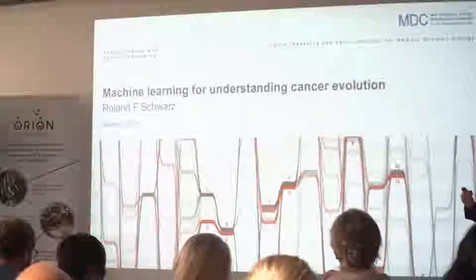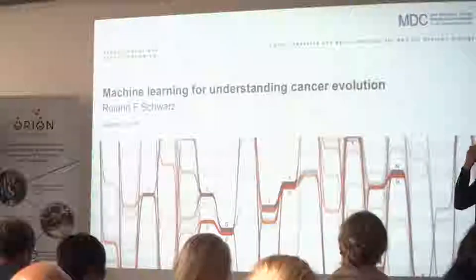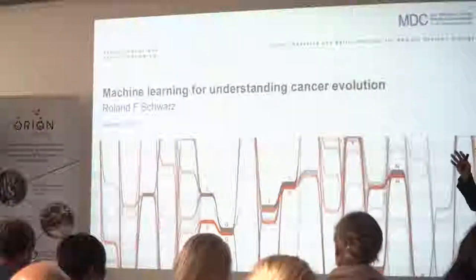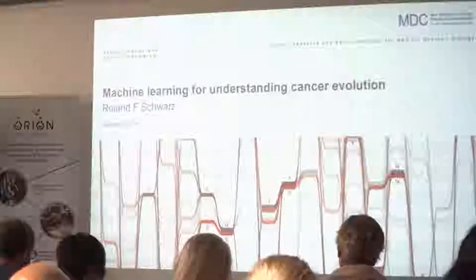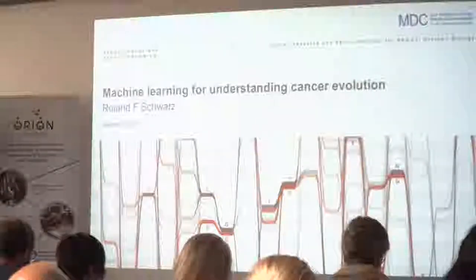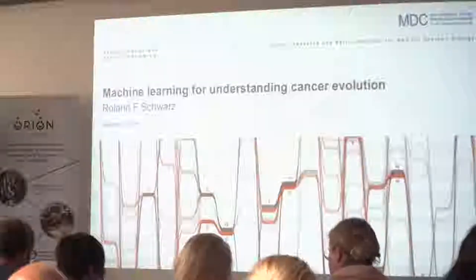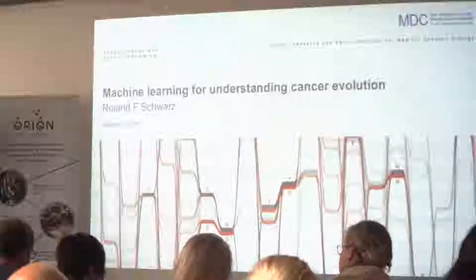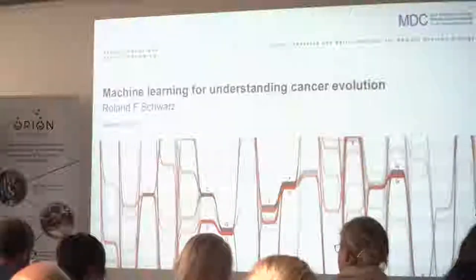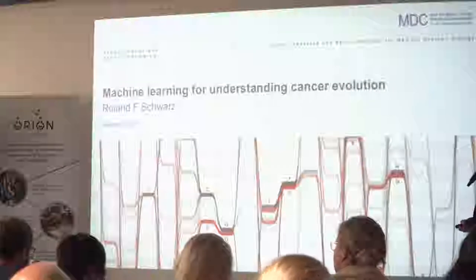After having seen 100,000 trees, your brain gets it, and you'll be able to identify objects as trees even though you have not seen that specific tree before. That's called generalization.